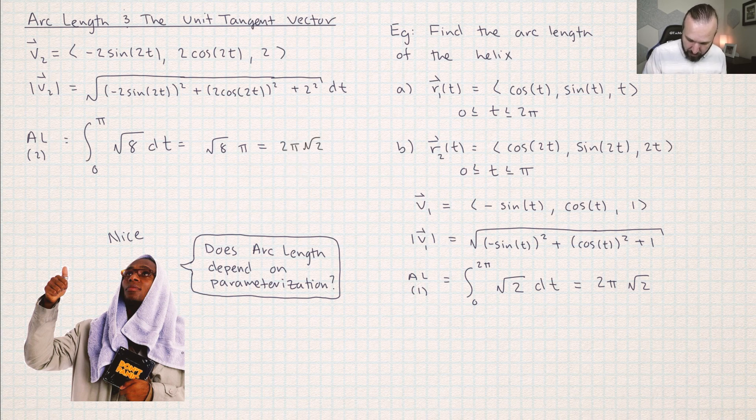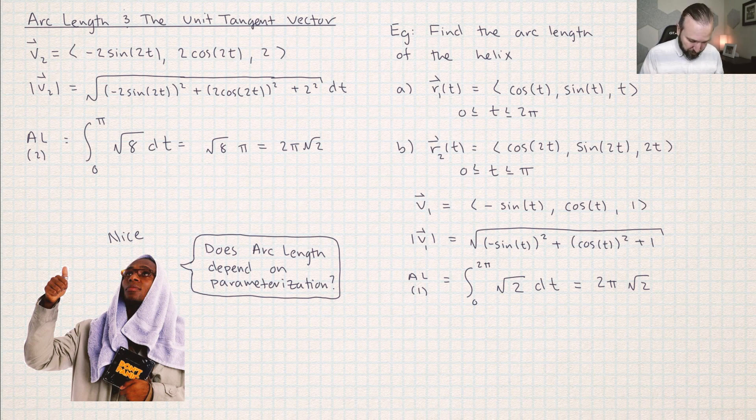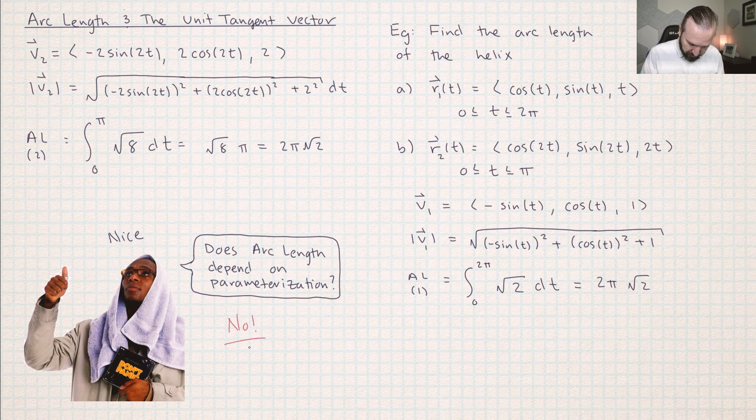So yay, it worked. I did actually get the same arc length for both parameterizations. So does arc length depend on parameterization? No, it does not depend on parameterization.